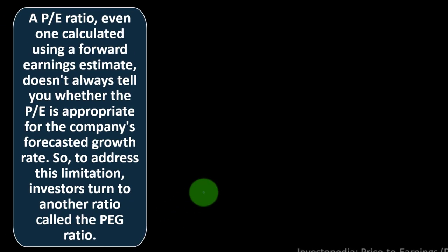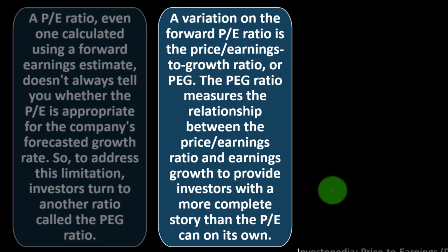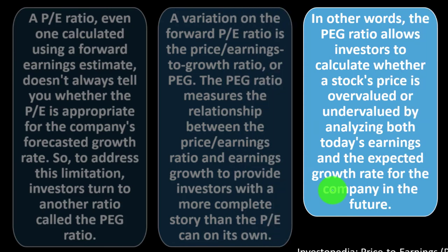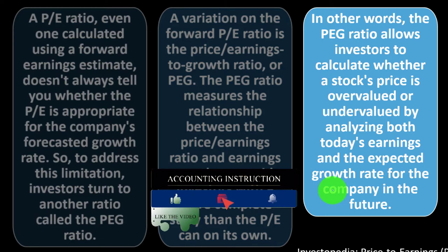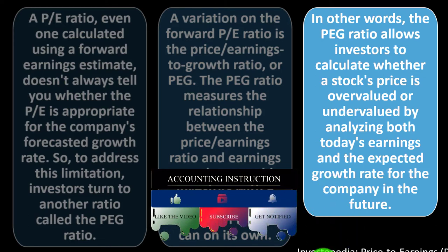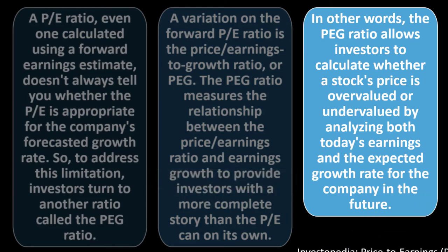PE versus the PEG ratio: The PE ratio, even one calculated using a forward earnings estimate, doesn't always tell you whether the PE is appropriate for the company's forecasted growth rate. To address this limitation, investors turn to the PEG ratio. A variation on the forward PE ratio, the price earnings to growth ratio, or PEG, measures the relationship between the PE ratio and earnings growth to provide investors with a more complete picture than the PE can on its own. The PEG ratio allows investors to calculate whether a stock's price is overvalued or undervalued by analyzing both today's earnings and expected future growth.